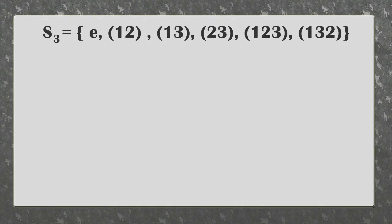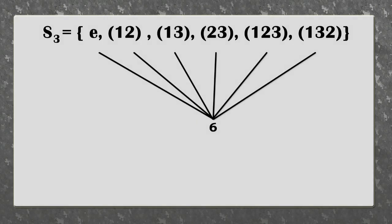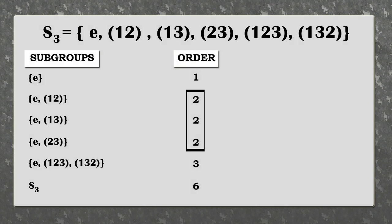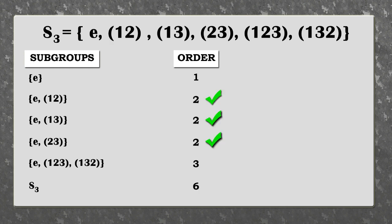Let's take the symmetric group S3. The order of this group is six. These are the different subgroups of S3: there are three subgroups of prime order two and one subgroup of prime order three. In other words, S3 contains three Sylow 2-subgroups and one Sylow 3-subgroup.